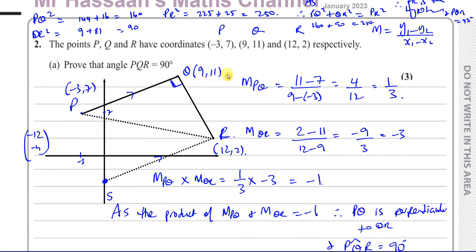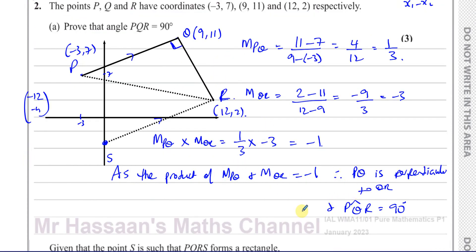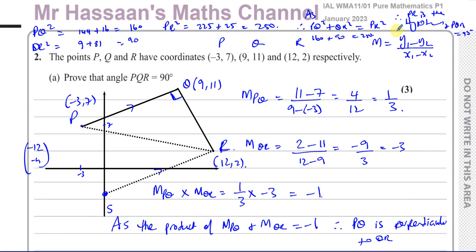That concludes question number 2 from this paper. Be very careful in part A to make a little statement at the end. Don't just leave it open-ended. You should state because the product of the gradients is negative 1, therefore they are perpendicular lines and that means PQR is 90 degrees. Or if you use the length formula, you have to state that because the sum of the square of the two shorter sides is equal to the square of the hypotenuse, that satisfies Pythagoras theorem, meaning PR is a hypotenuse and PQR is 90 degrees. Other questions from this particular paper can be found in the playlist. You can subscribe to my channel by clicking on this link. Thank you for watching and see you soon.